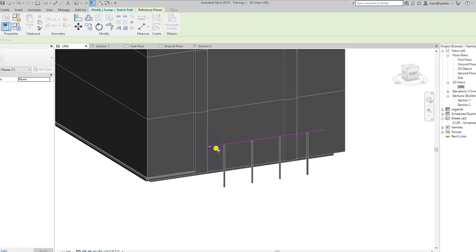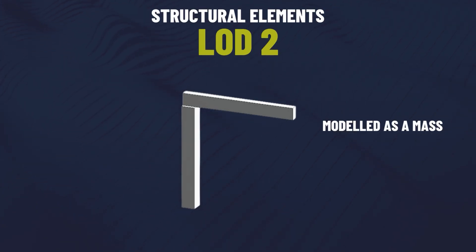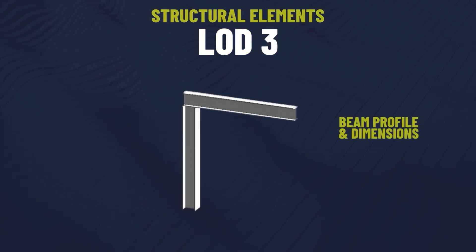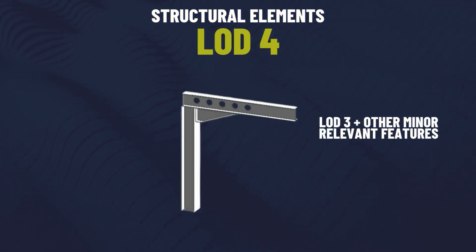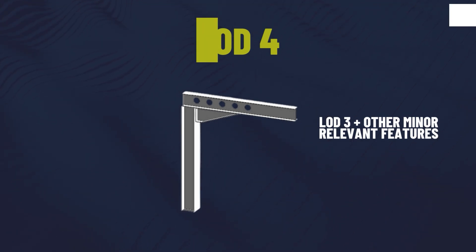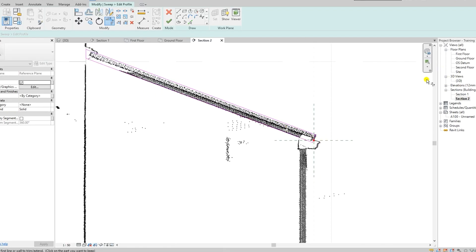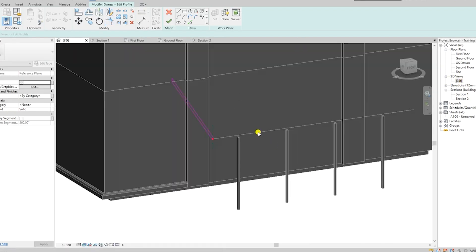Structural elements form the backbone of any 3D model. At LOD2 these might just show the basic massing. At LOD3, accurate dimensions and beam profiles are included. By LOD4, details like steel connections and bolts are captured. This level of detail is vital for engineers and contractors to avoid errors during the construction process.